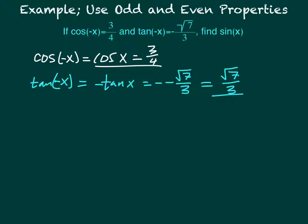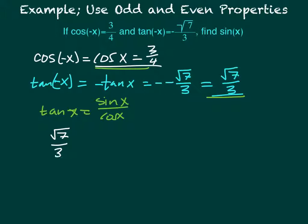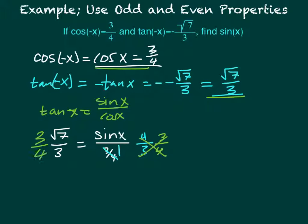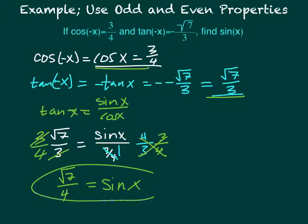If we have cosine and tangent, we can find sine because tangent of x equals sine over cosine. Now that we have cosine of x and tangent of x, I'll fill in what I know: square root of 7 over 3 equals sine of x over cosine of x, which is 3/4. Inverting and multiplying, I multiply by 3/4, giving sine of x equals square root of 7 over 4. That's your final answer.